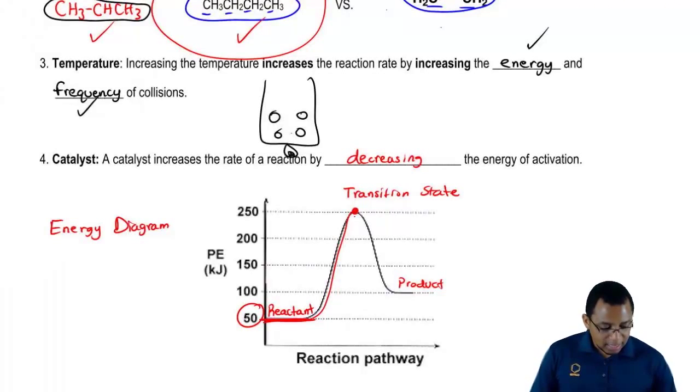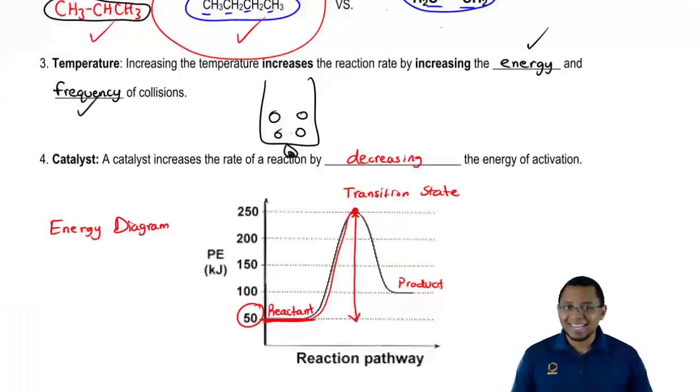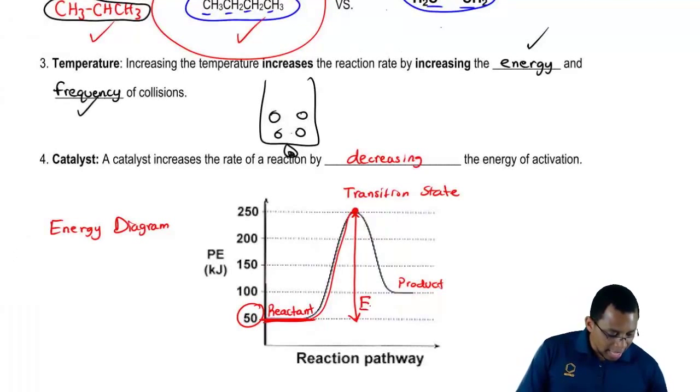The distance from the top of the hill all the way down to the bottom of the hill where the reactant line is, that is our energy of activation, or EA, the amount of energy it takes to climb up to the top.